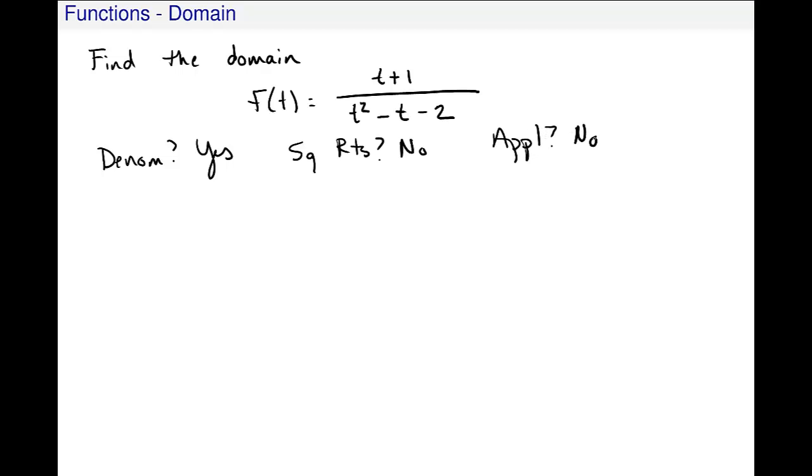And I take the denominator and set it equal to 0 to see where it is 0 and will cause a problem. This is a quadratic function. I need to solve this equation, quadratic equation, in order to find it. I think this is factorable. t minus 2, I think. And t plus 1, does that work? I think that works. And then I split using the 0 product property. t minus 2 equals 0 and t plus 1 equals 0. And I get t is 2 and t is negative 1.